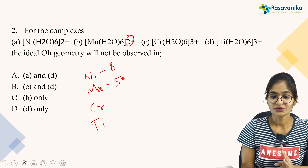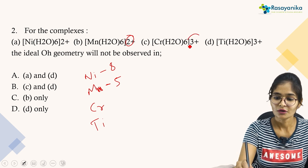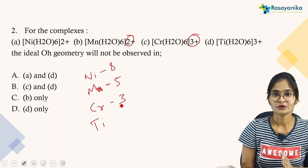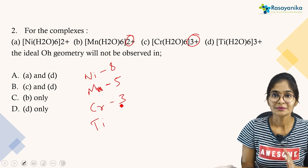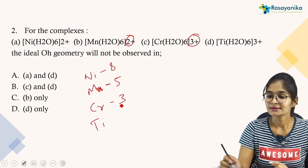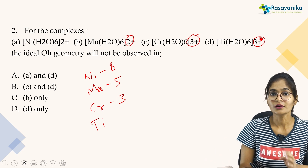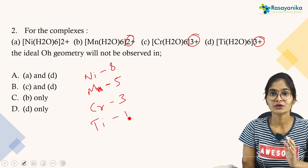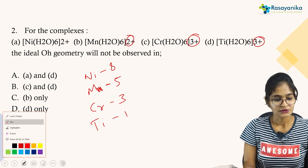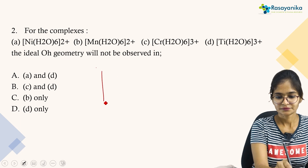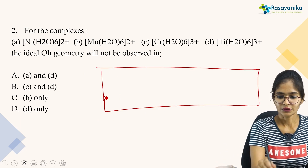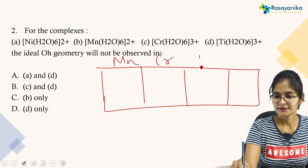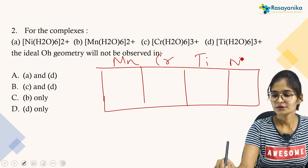For titanium (atomic number 22) in +3 oxidation state: 4 minus 3 = 1 electron. So the electron counts are: Mn(5), Cr(3), Ti(1), Ni(8). Now the task is to fill the EG and T2G levels for each of these four complexes — manganese, chromium, titanium, and nickel.